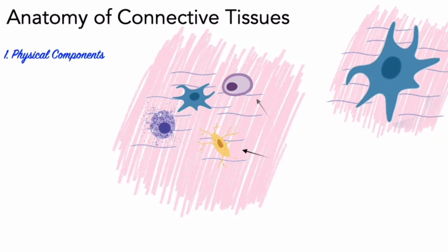The protein fibers and ground substance are collectively called the extracellular matrix. It is the extracellular matrix that accounts for the bulk of the volume of connective tissues. So, unlike epithelial tissues, high cellularity is not a defining characteristic for connective tissues.